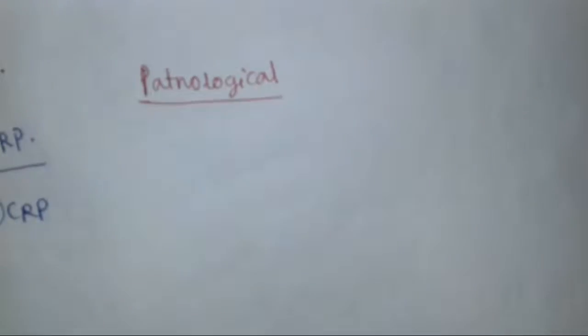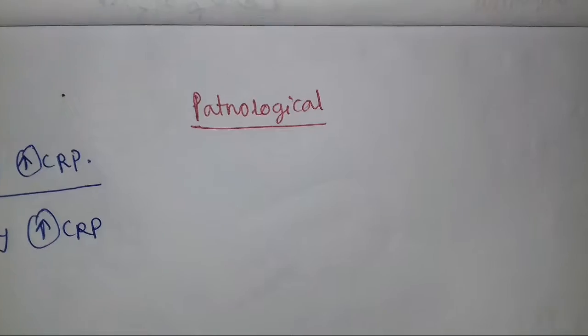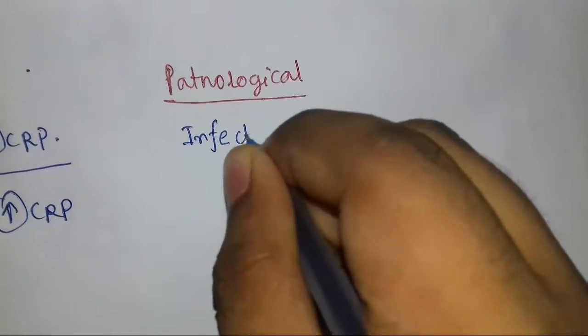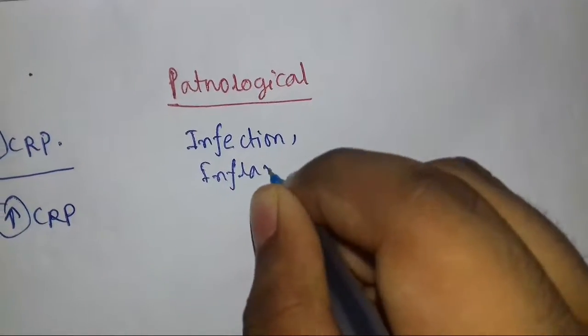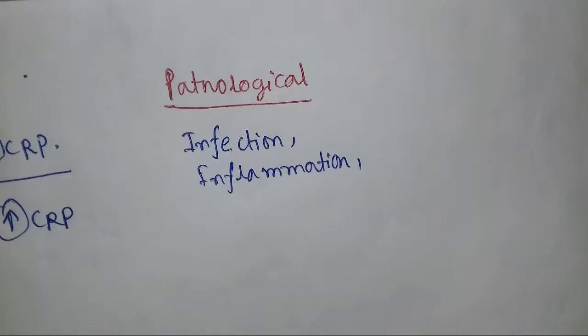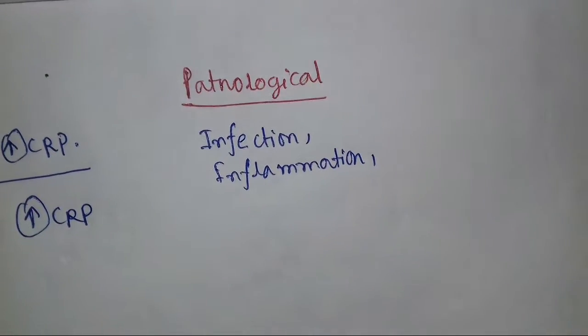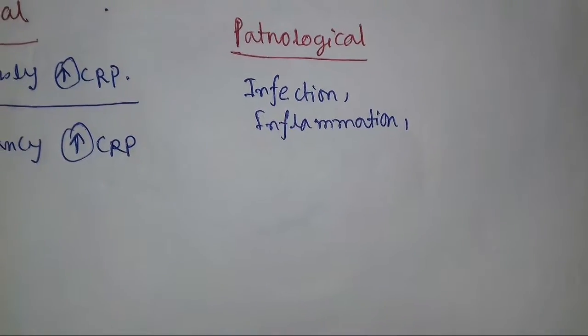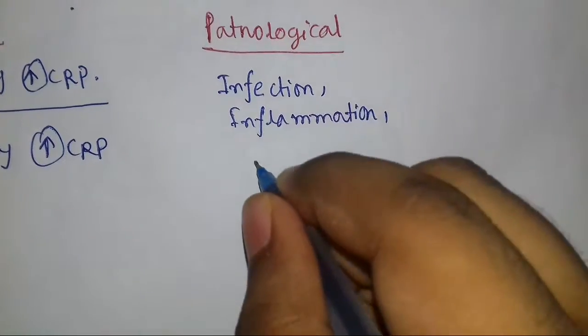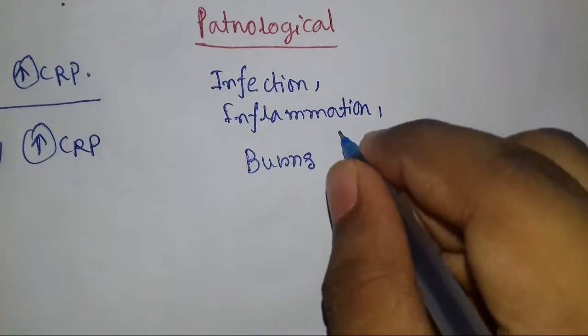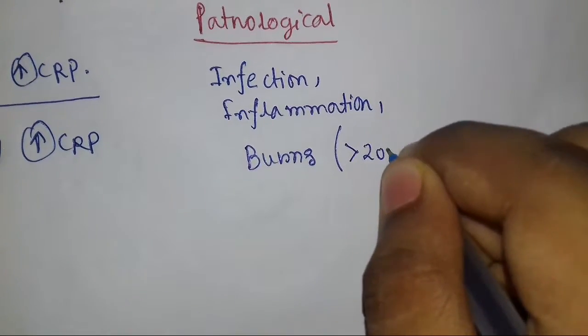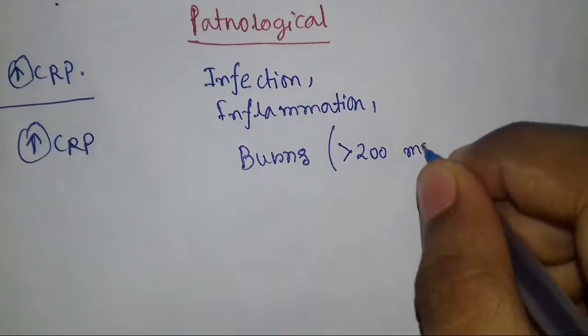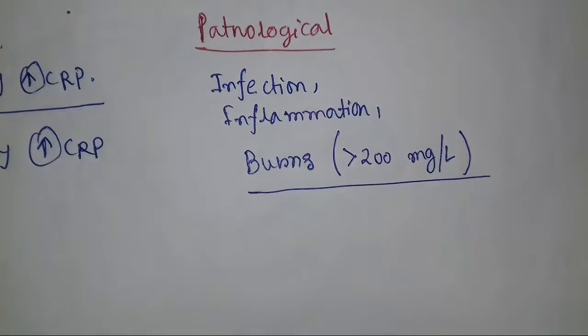The pathological causes of elevated CRP include infection or inflammation — which may be viral, fungal, or bacterial. In the case of burns, the CRP level may rise above 200 milligrams per liter, which is another notable pathological condition.